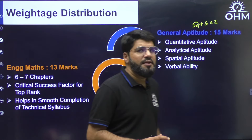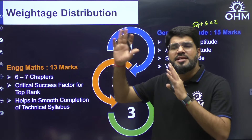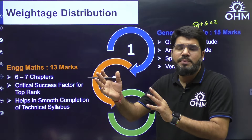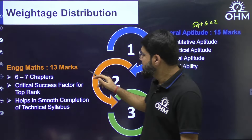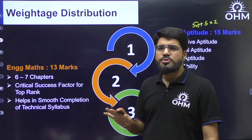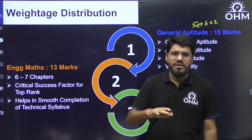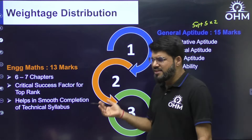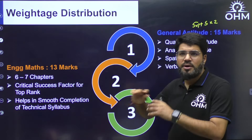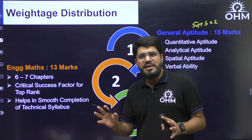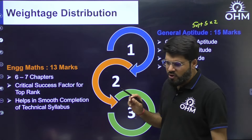Moving ahead to the next part: Engineering Mathematics. From 2021 onwards, the weightage has been fixed at 13 marks. Before that, maths was there but the weightage varied — sometimes 10, 12, or even up to 15 marks. IIT Bombay fixed it at 13 marks from 2021. Engineering maths comprises six to seven chapters like linear algebra, probability, calculus, vector calculus, differential equations, complex variables, and more. This is a critical success factor for top rank.